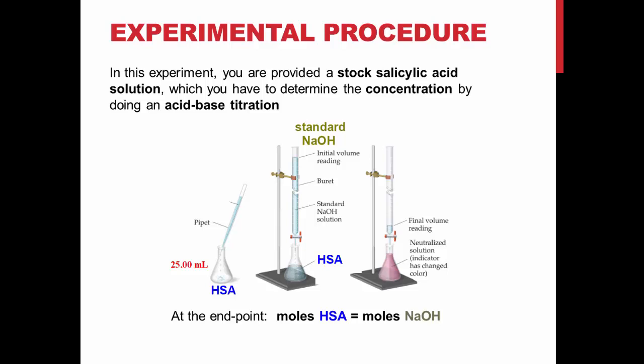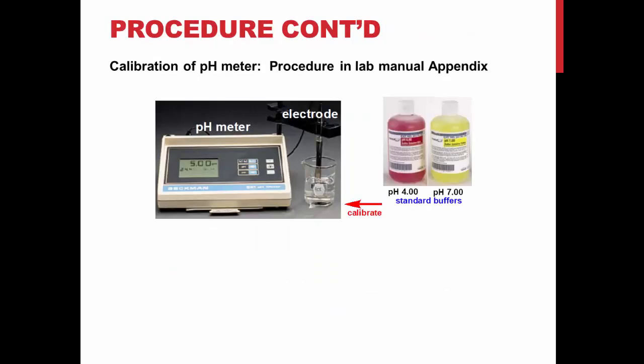For the next step in the experiment, you will need to calibrate a pH meter. The procedure for this is in the lab manual appendix. There are also instructional videos available on Moodle showing correct calibration procedures. There are two types of pH meters, so make sure you're using the correct method for your instrument.